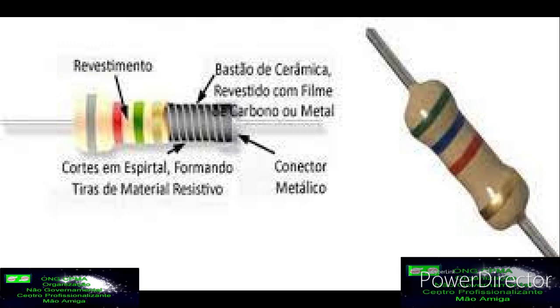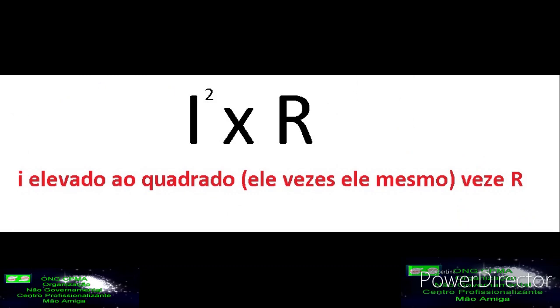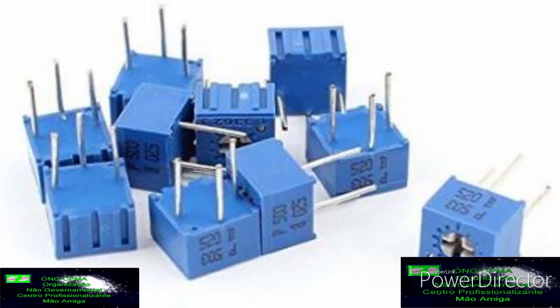O valor de potência indica qual a máxima potência que o resistor pode tolerar. A potência é especificada em watts. A potência é calculada usando o quadrado da corrente multiplicada pelo valor da resistência, ou seja, I elevado ao quadrado vezes R. Nunca se esqueçam que I é corrente e R é resistência, ou seja, a corrente multiplicada por ela mesma vezes a resistência do condutor. Caso a potência seja excedida, o resistor irá aquecer por efeito Joule, podendo queimar. Resistores em circuitos eletrônicos possuem valores típicos de potência de 1/8, 1/4 e 1/2 watt.